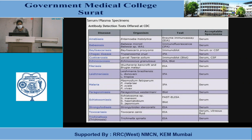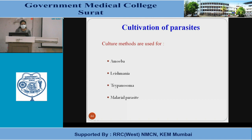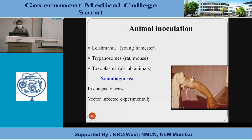Antibody detection tests are offered by the CDC — these are various serological tests proposed for various parasitic diseases. Cultivation of parasites: culture methods are used for amoeba, Leishmania, Trypanosoma, and malaria parasites. Animal inoculation is used: young hamsters for Leishmania, rats or mice for trypanosomes, and all lab animals for Toxoplasma. Xenodiagnosis is used in Chagas disease, where the vector is infected experimentally.